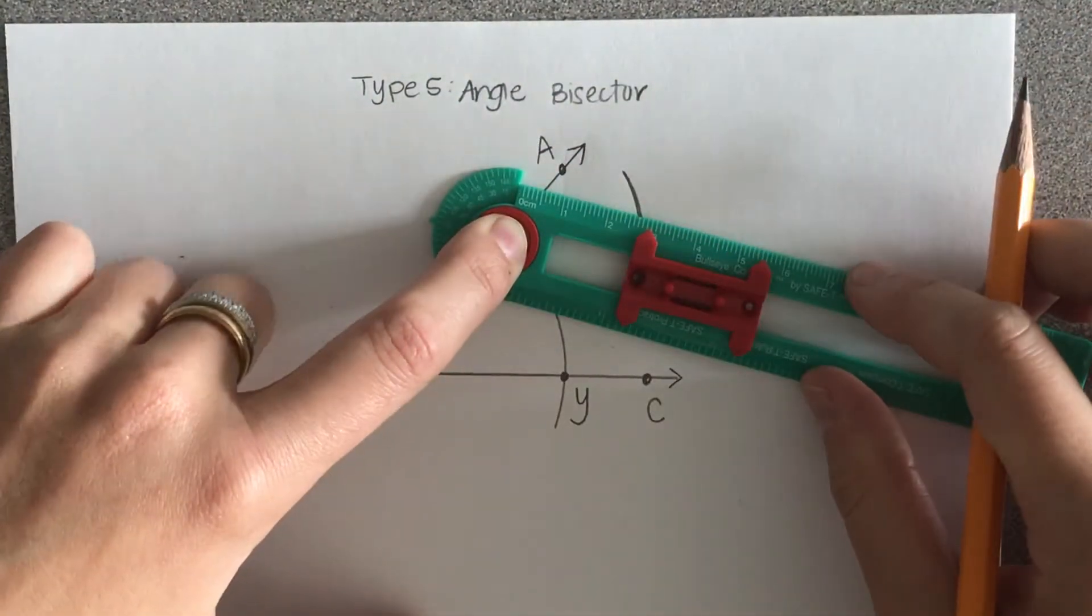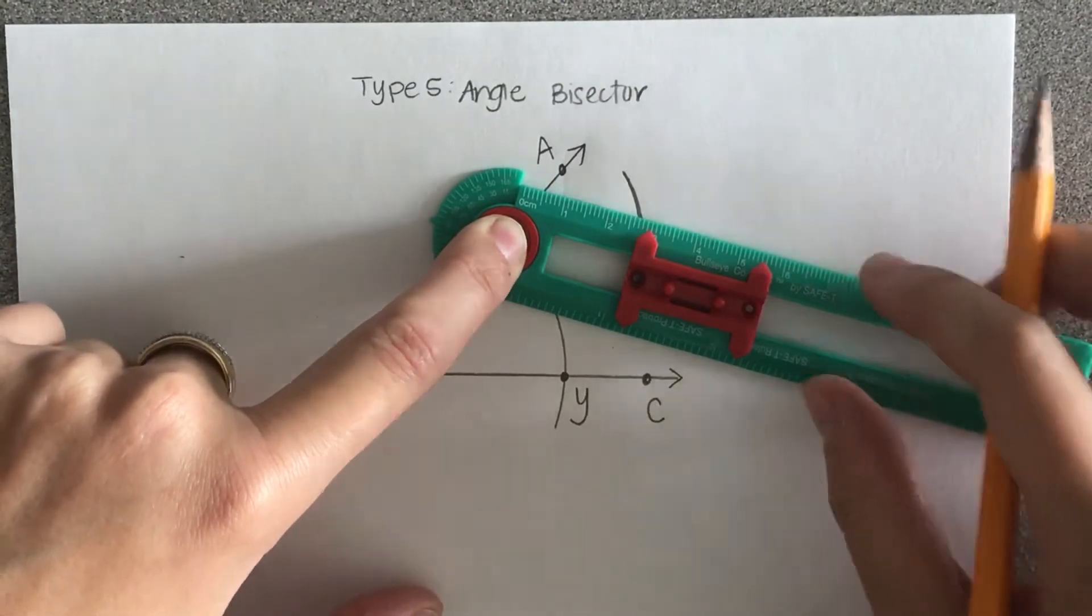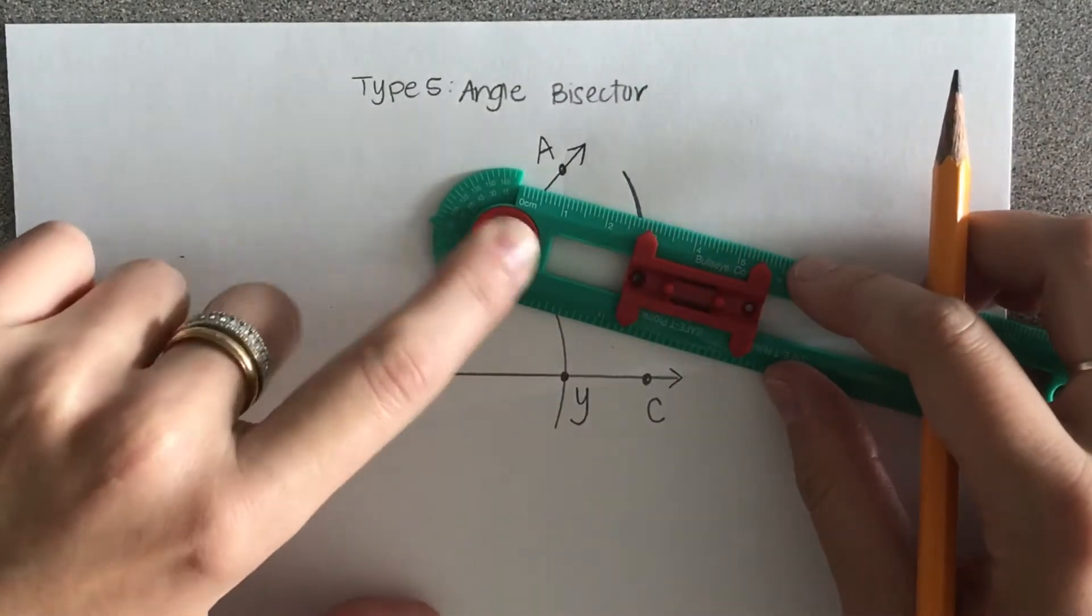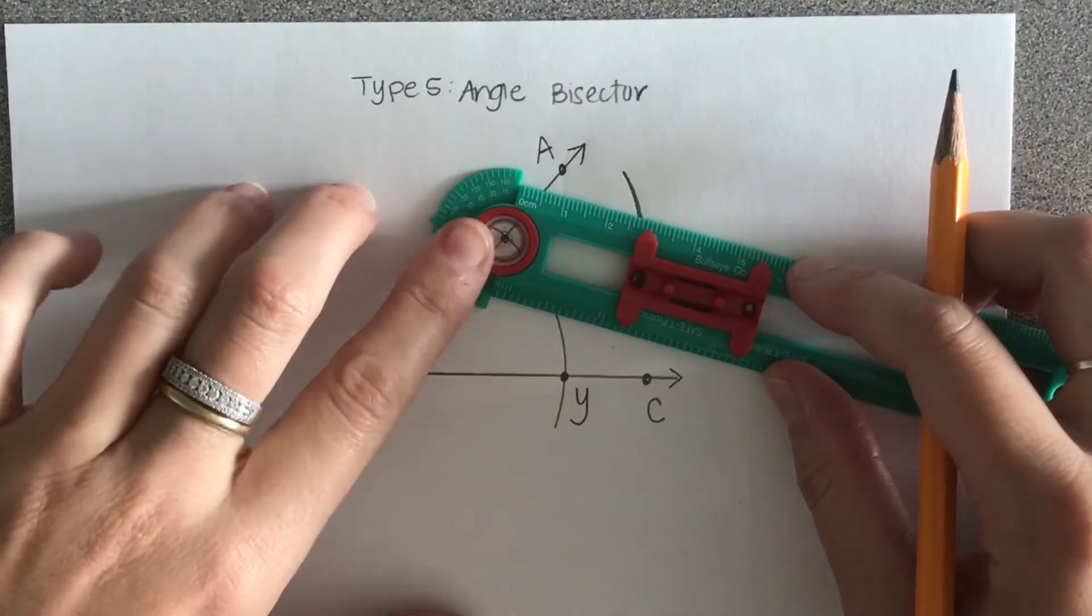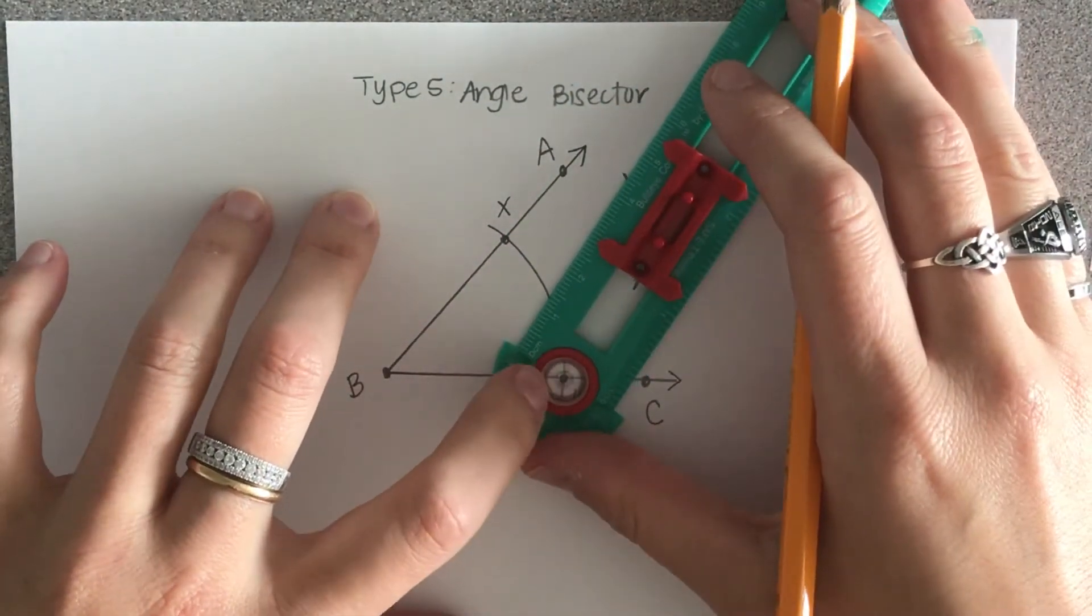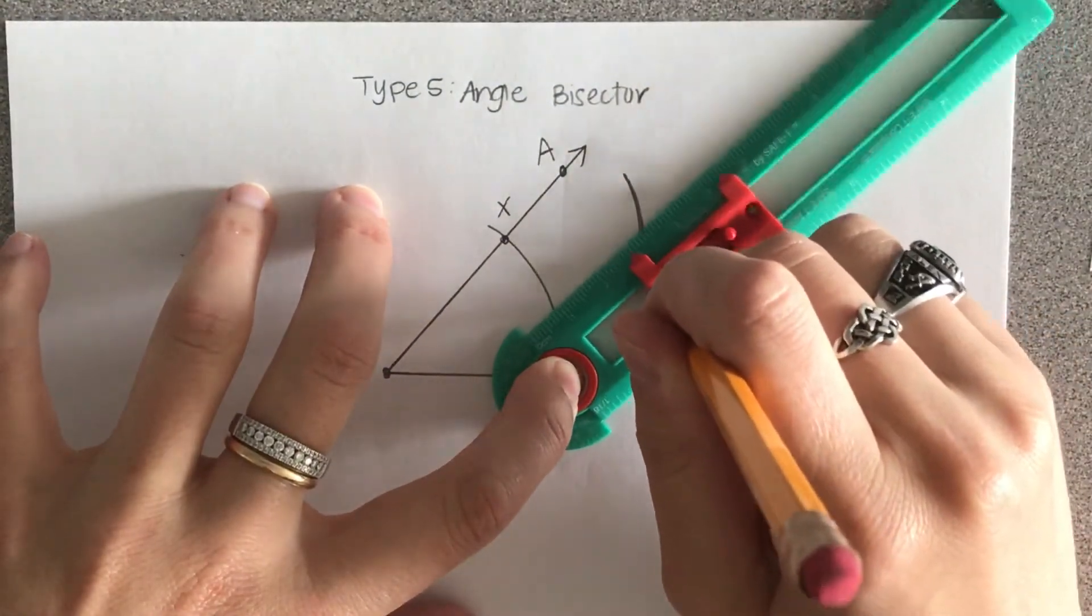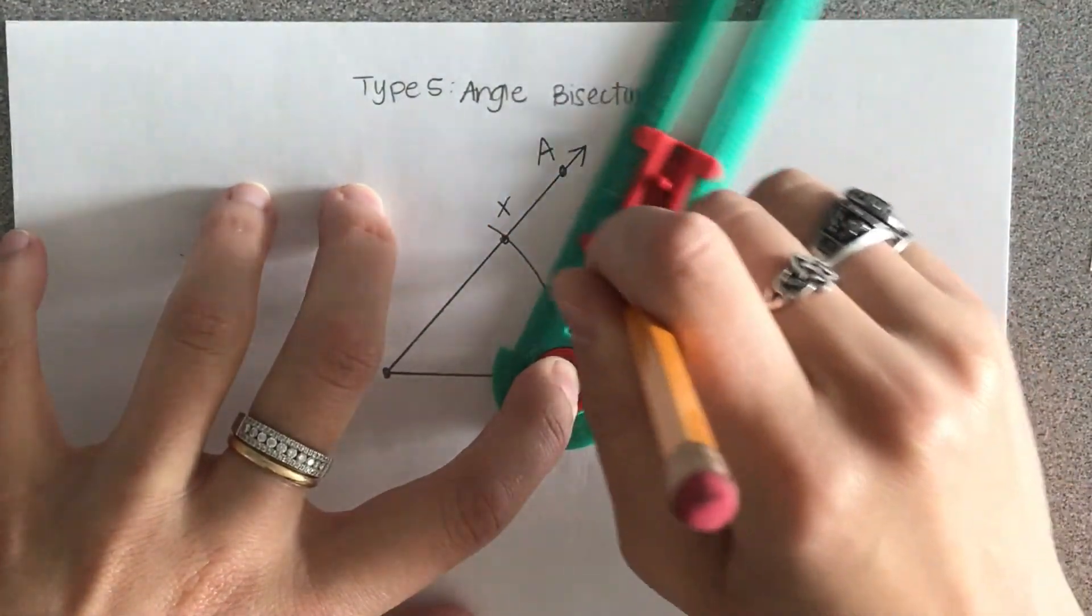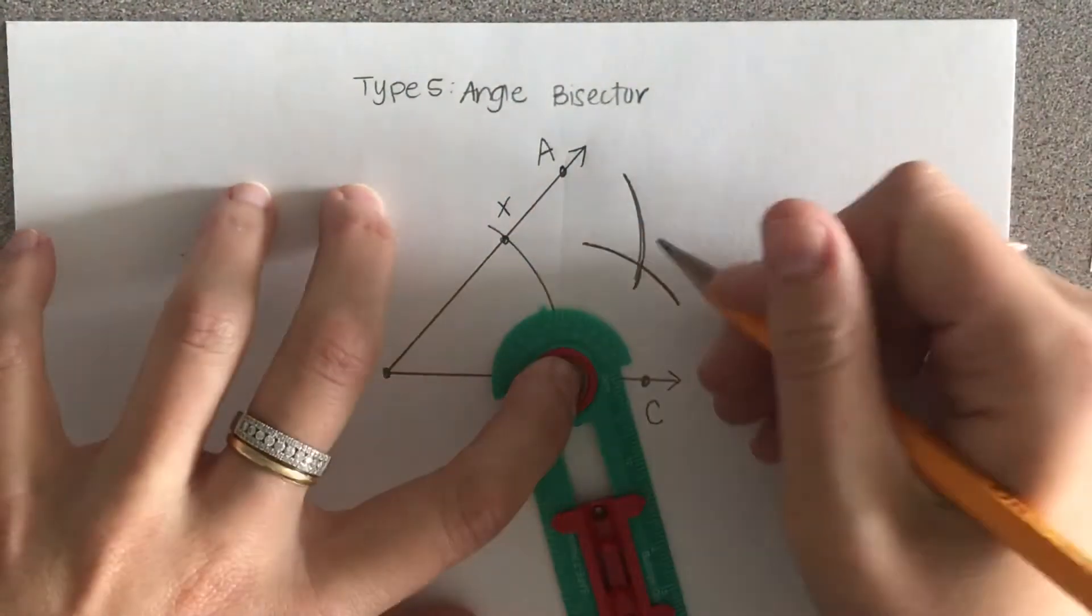Now, leaving the compass exactly the same without changing this radius, I'm going to take the point and put it on point Y and draw another intersecting arc. My two arcs should meet at some point.